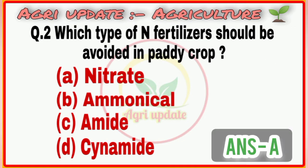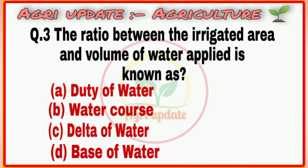Question number 3: The ratio between the irrigated area and volume of water applied is known as. First option is Duty of Water, second option is Watercourse, third option is Delta of Water, fourth option is Base of Water.